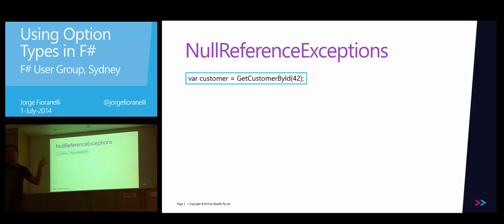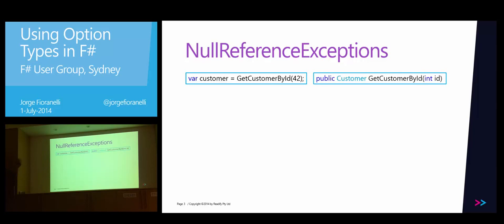If you see that method — that's C#, not even F# yet — can you tell me if that customer could be null or not? It's hard to tell. Because if you go and check the signature of the method, it says it will return a customer, but it's not actually telling you if that could be null or not. You could assume that if the ID 42 customer doesn't exist, it could throw an exception or could return null.